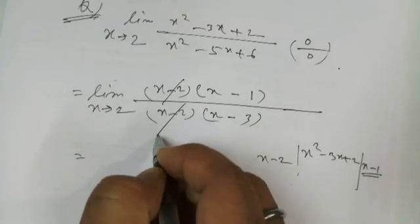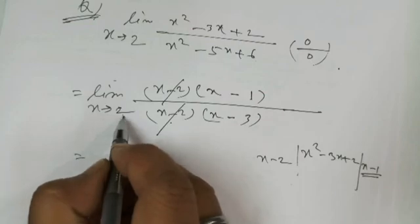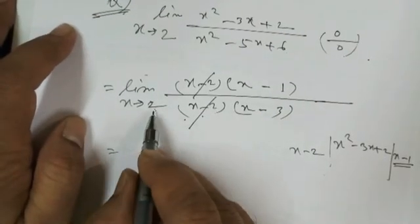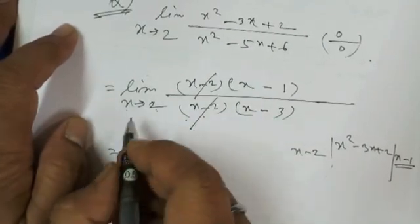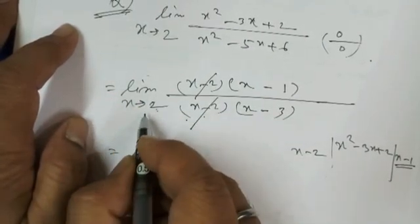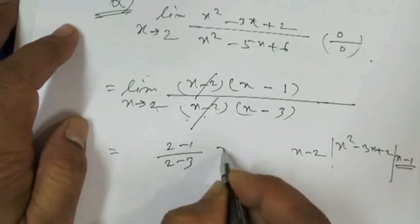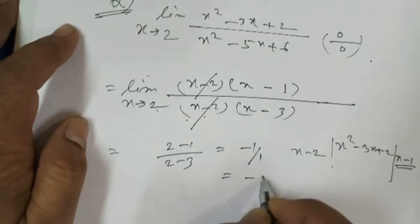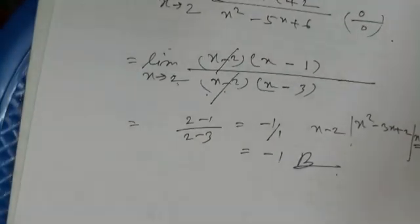After cancelling (x - 2), put x = 2 to get (2 - 1)/(2 - 3) = 1/(-1) = -1. So the answer is -1. This is the factorization method.